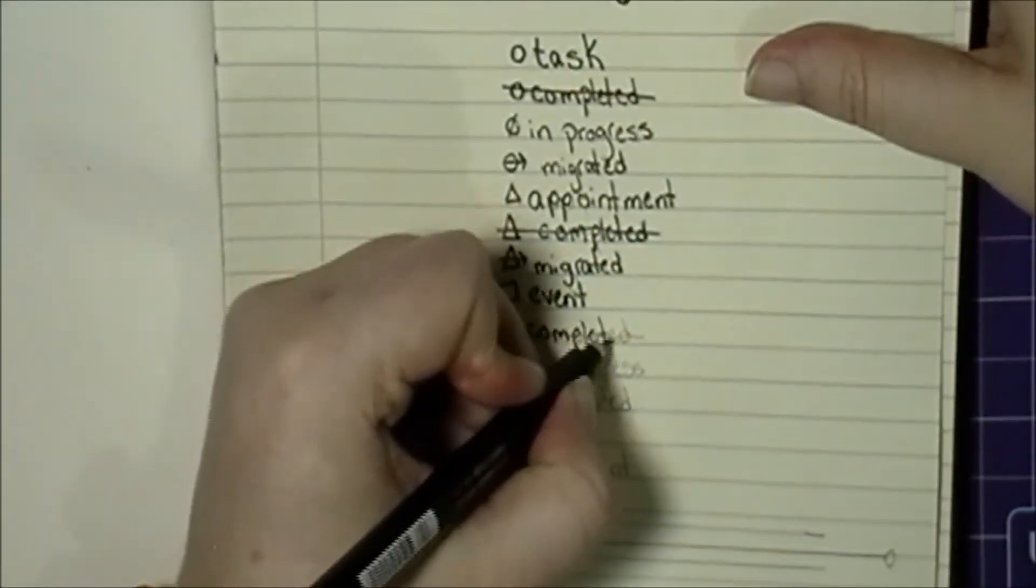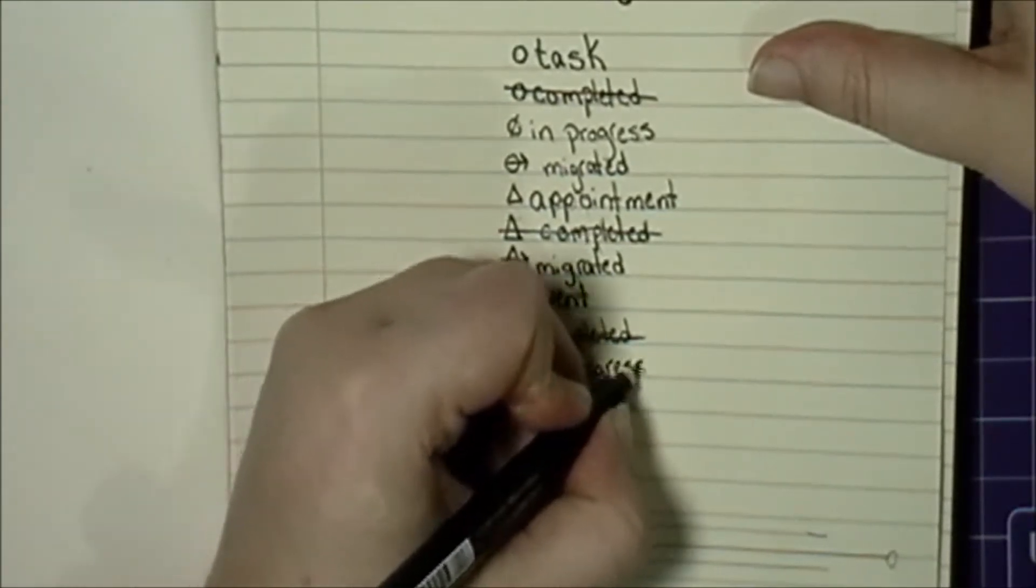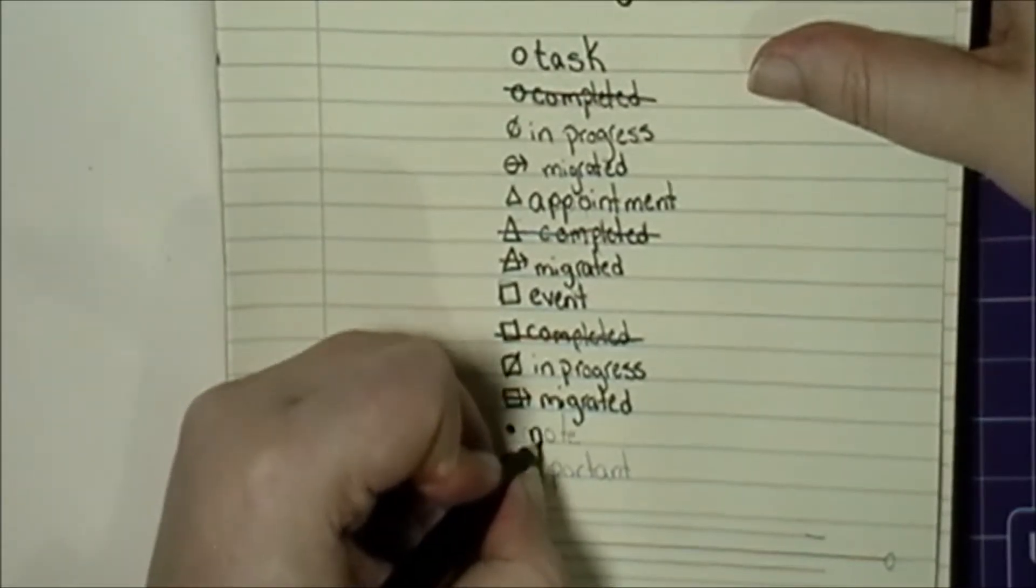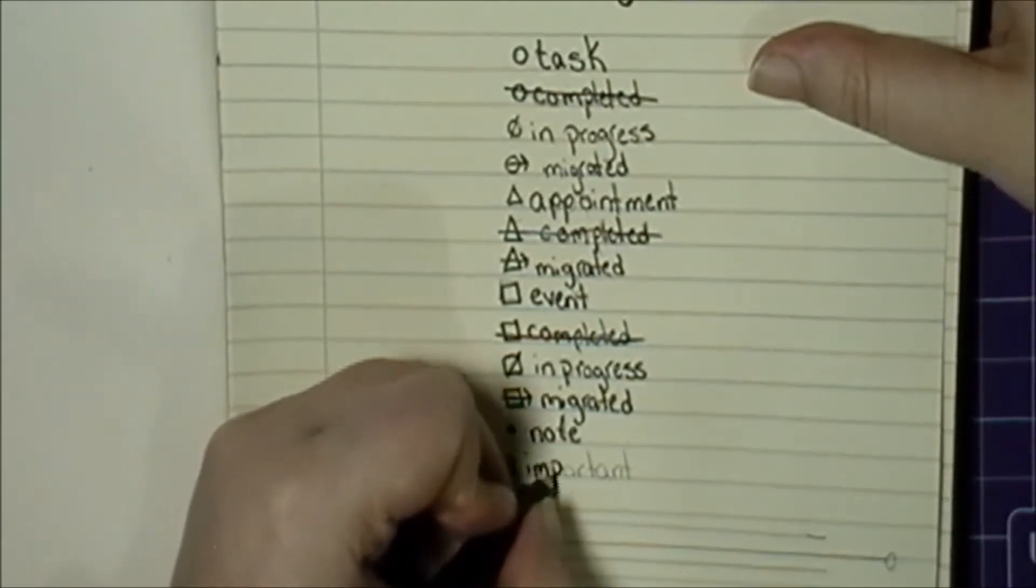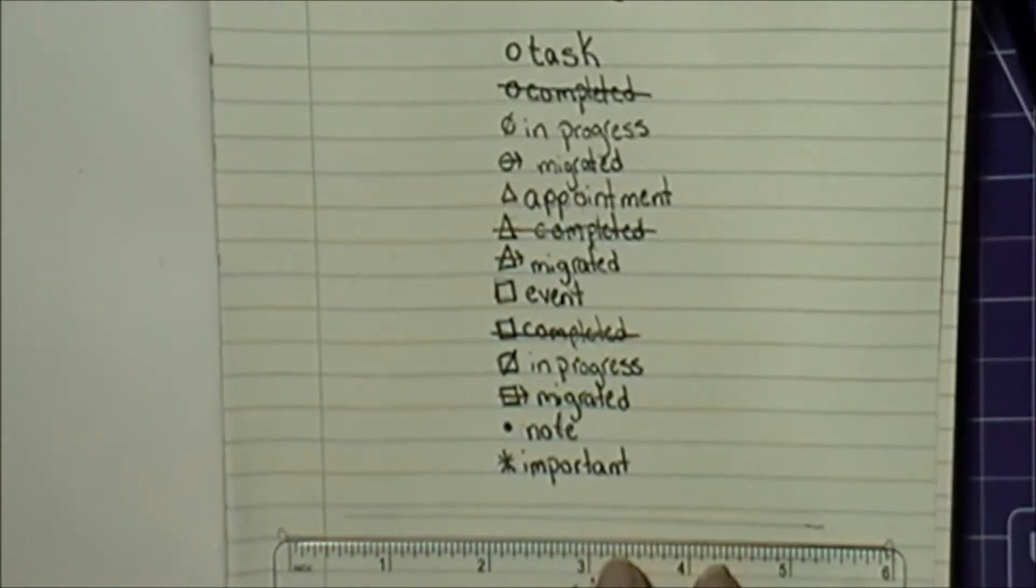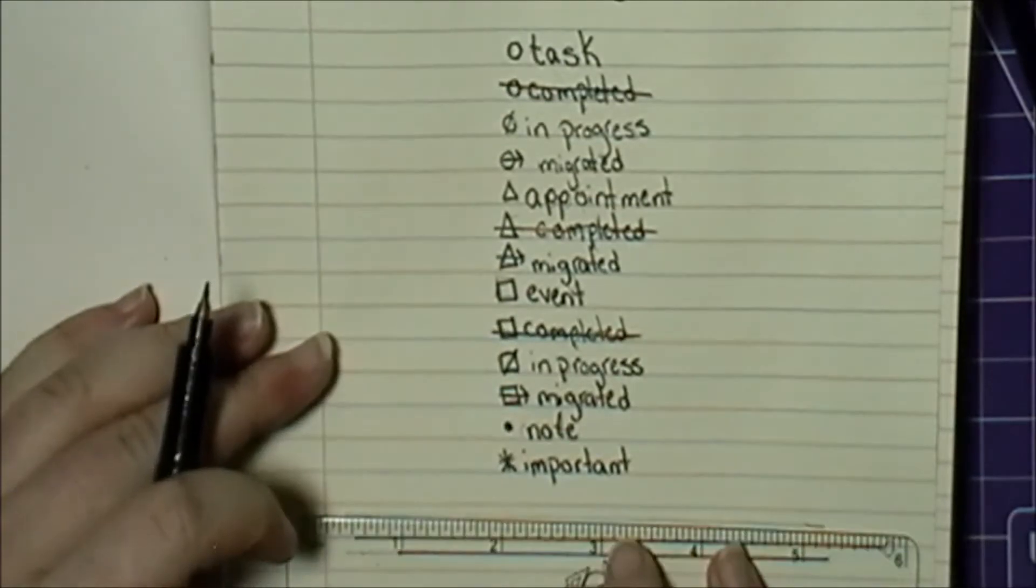And the first page is my key. I don't do a legend in this bullet journal. I don't think I'll ever do a legend in any of my bullet journals because I don't keep up with a legend. I don't update it, I don't use it, so I didn't feel the need to add it in here.